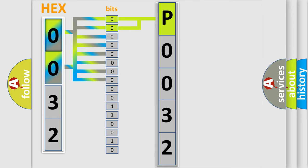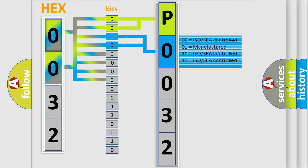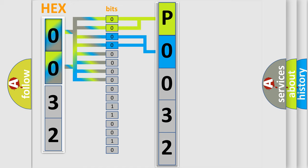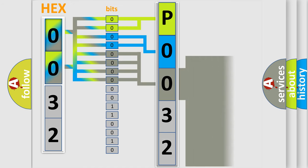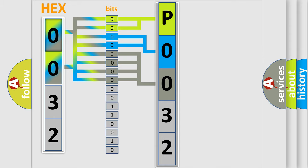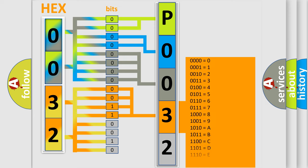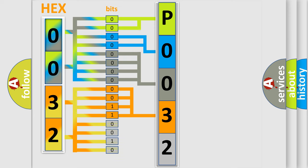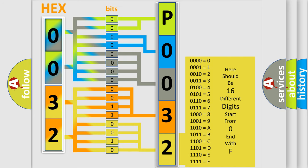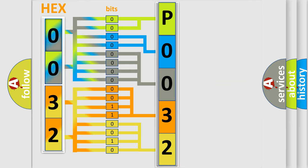The next two bits determine the second character. The last four bits of the first byte define the third character of the code. The second byte is composed of a combination of eight bits. The first four bits determine the fourth character of the code, and the combination of the last four bits defines the fifth character. A single byte conceals 256 possible combinations.